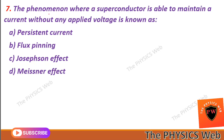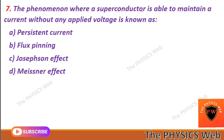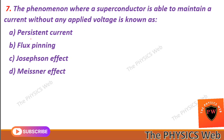Next, question seven: the phenomenon where a superconductor is able to maintain a current without any applied voltage is known as persistent current. So A is your correct option.